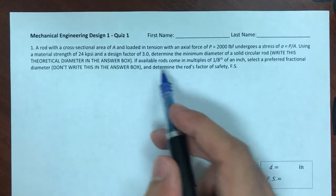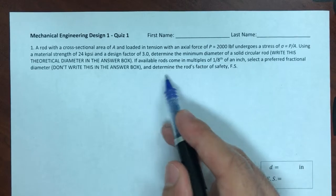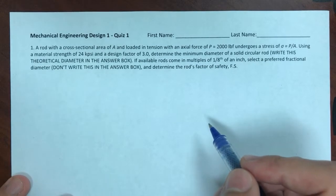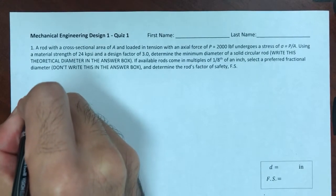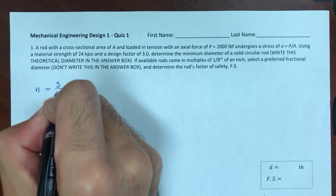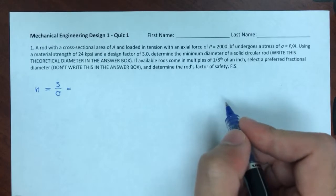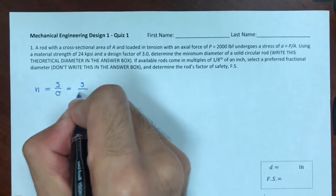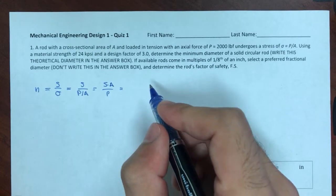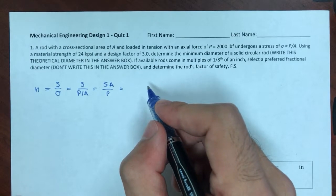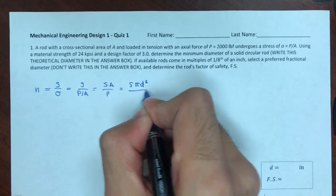So let's do that first. If available rods come in multiples of 1/8, choose one, then calculate the factor of safety. I know that my design factor is S — the strength over the stress. The stress is just a tension one, P over A, meaning S = strength times A over P. And the area of a rod is the area of a circle, pi D squared over 4.